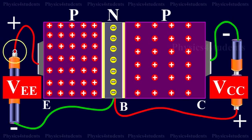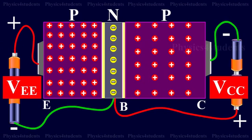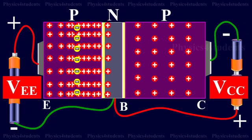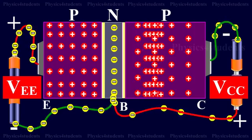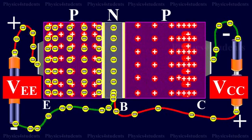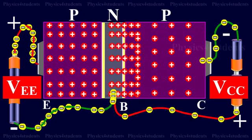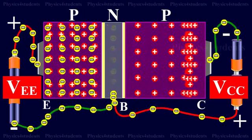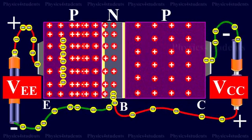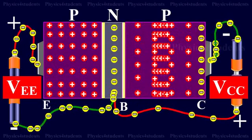The emitter-base junction is forward biased and the collector-base junction is reverse biased. Since the emitter-base junction is forward biased, a large number of holes cross the junction and enter the base. At the same time, very few electrons flow from the base to the emitter. These electrons, when they reach the emitter, recombine with an equal number of holes. The loss of holes in the emitter is made up by the flow of an equal number of electrons from the emitter to the positive terminal of the battery.